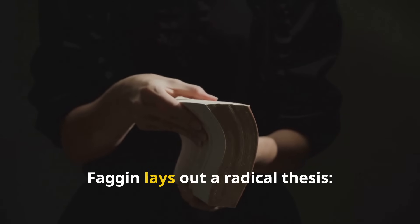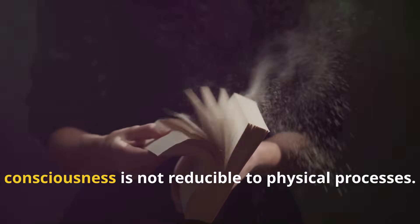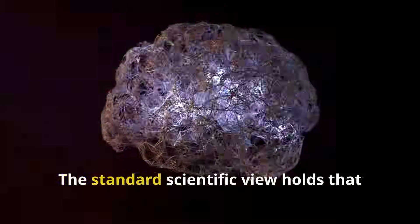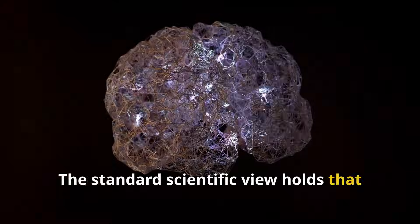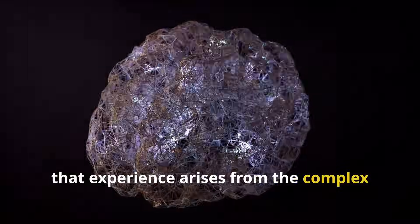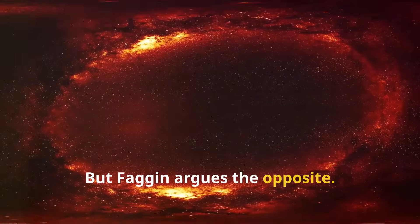In Irreducible, Faggin lays out a radical thesis: consciousness is not reducible to physical processes. The standard scientific view holds that mind emerges from matter, that experience arises from the complex dance of neurons. But Faggin argues the opposite.